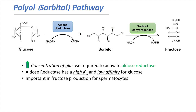This pathway is very important for fructose production — that's the main function of this pathway, to take glucose and make it into fructose. It's very important in spermatocytes, as spermatocytes utilize fructose as their main energy source.